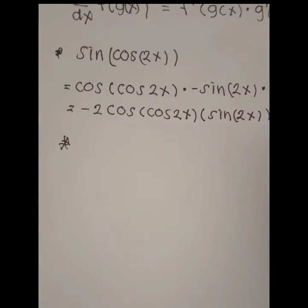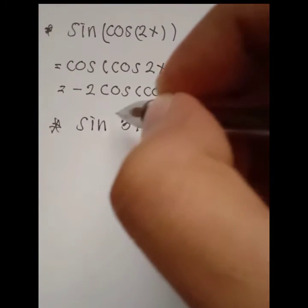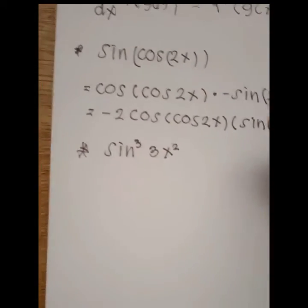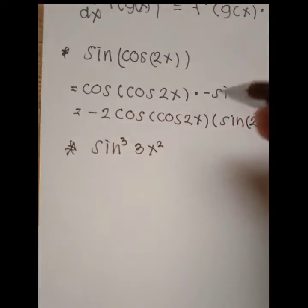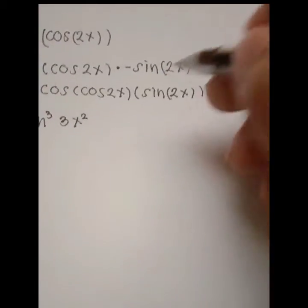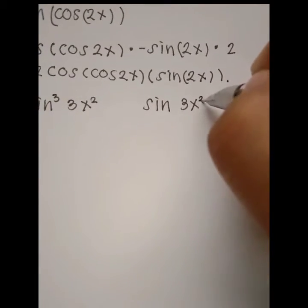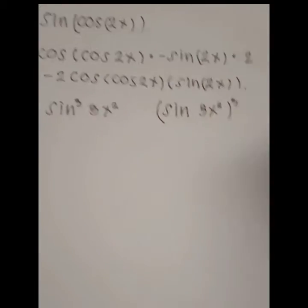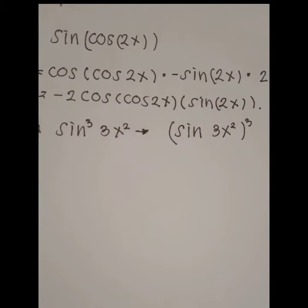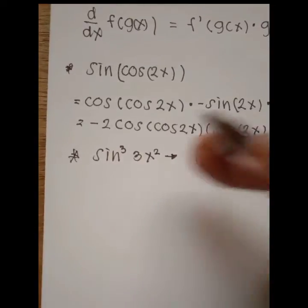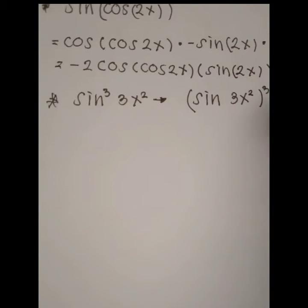The next example: we are going to find the derivative of sine³(3x²). This equation is the same as rewriting it as [sin(3x²)]³ — they are just the same. In finding the derivative of this function we first apply the power rule.